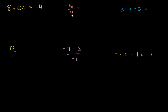Now negative 16 divided by positive 4 — we have to be very careful here. If I just had positive 16 divided by positive 4, that would just be 4. But because exactly one of these two numbers is negative, I'm going to get a negative answer.